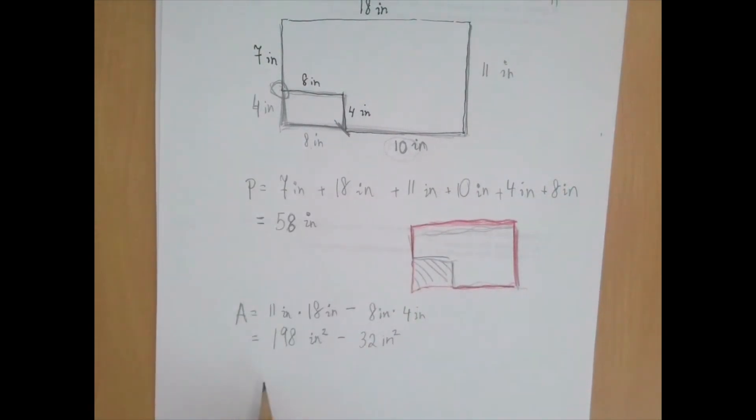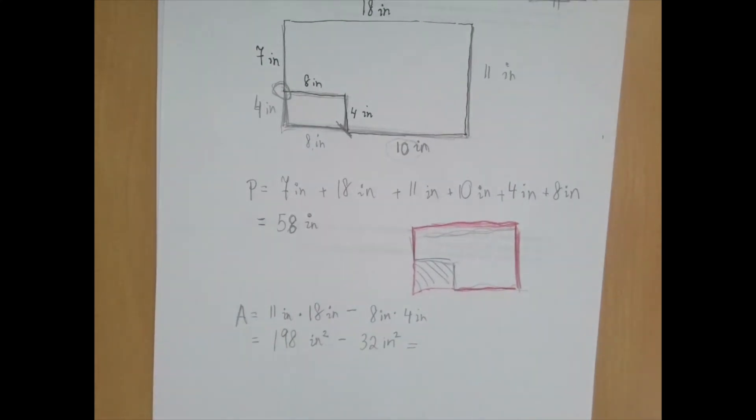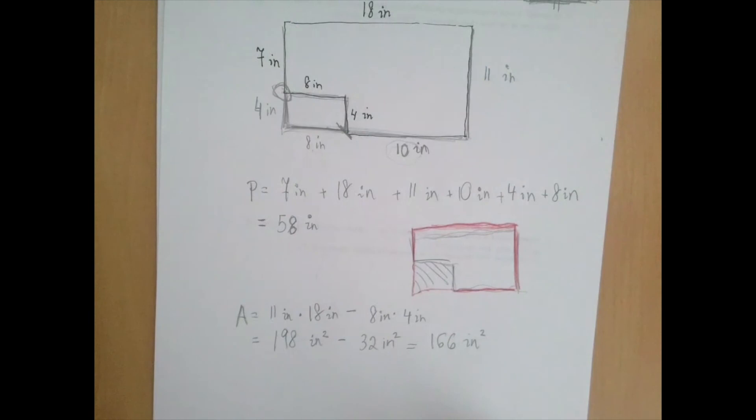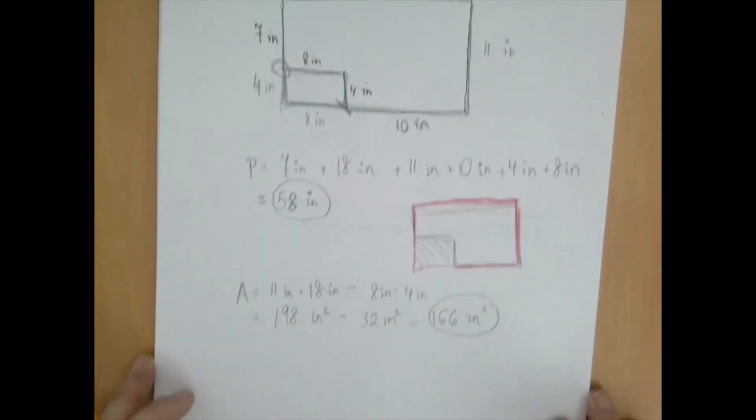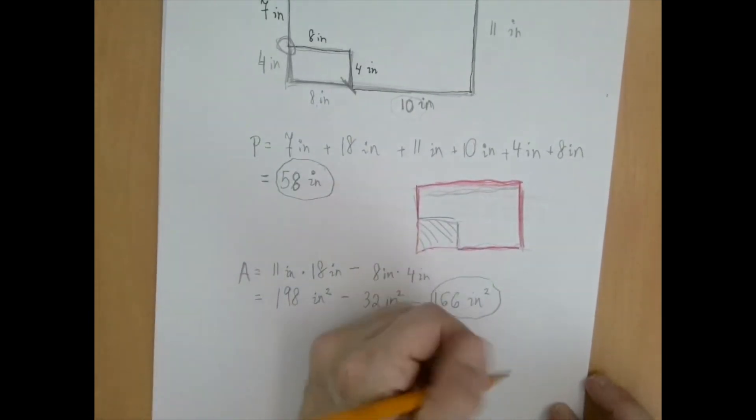So what we have is 198 square inches minus 32 square inches, which is 166 square inches. And that's the area.